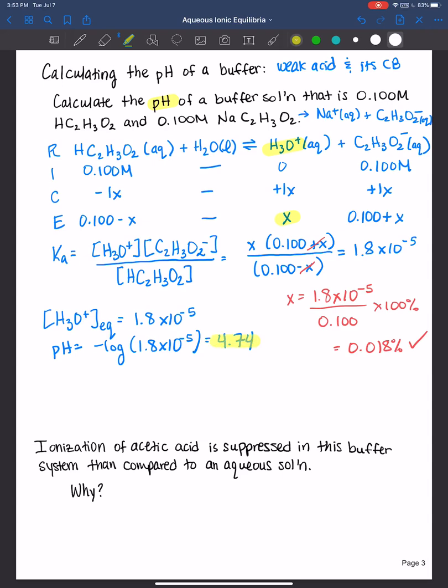So the pH of our buffer is 4.74 when we put in 0.1 molar acetic acid with 0.1 molar sodium acetate.